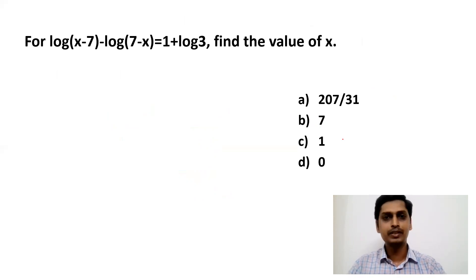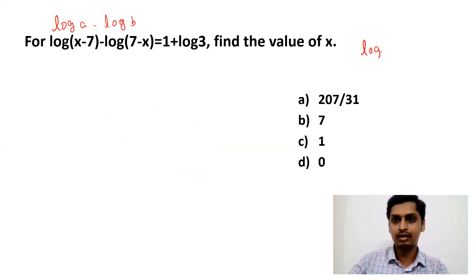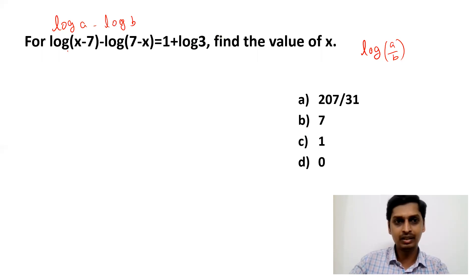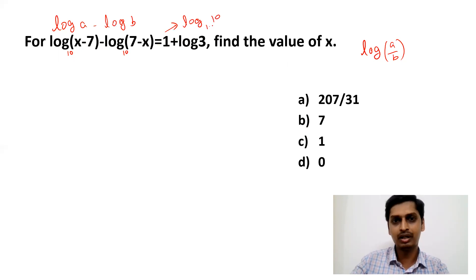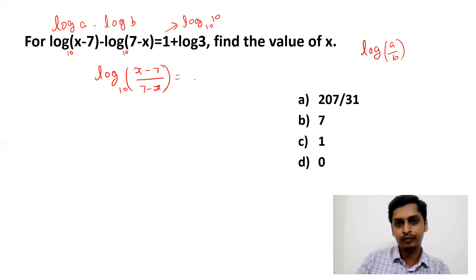This question is purely based on the properties of logarithm. We have the format log a − log b, which can be written as log(a/b). We also have 1 + log 3; this '1' can be written as log 10 to the base 10, because when no base is mentioned, base 10 is assumed. So log(x−7) − log(7−x) becomes log((x−7)/(7−x)) to base 10, equal to log 10 + log 3 to base 10.